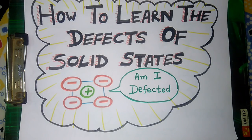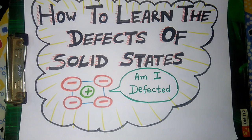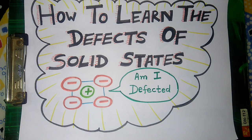Hello guys, this is Gaurav and in this video I am going to tell you how to learn the defects of solid states. In the chapter solid states, you have a topic known as defects, in which we need to study various defects like Frenkel defects, Schottky defect, and Metal Excess defect. There are some defects like Metal Excess defect which you can learn easily and correlate with the properties.